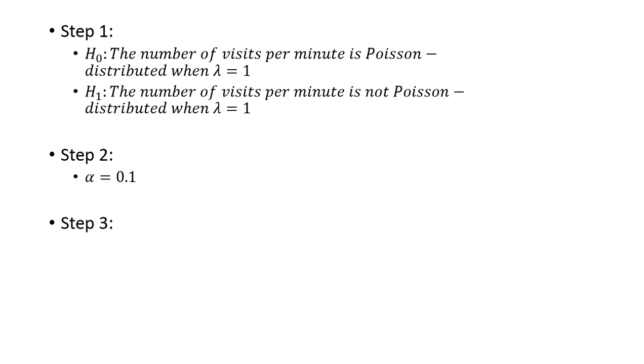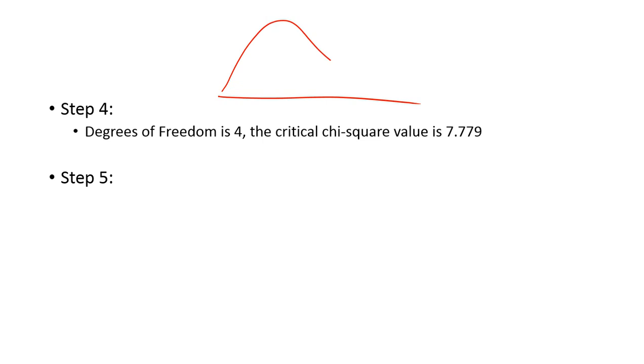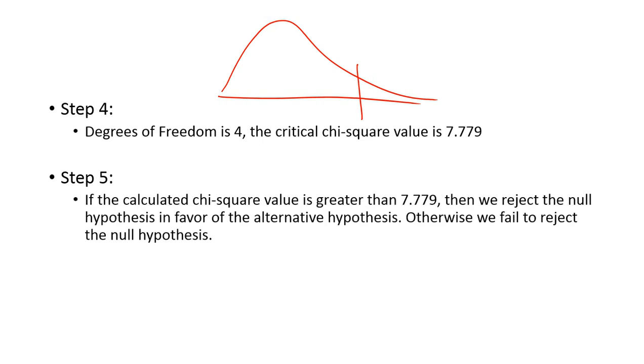Step two is our alpha. Alpha was 0.1, which is about a 90% level of confidence. Followed by that, we want to state what tests we're doing, which is our chi-squared test with a Poisson distribution. Step four is our drawing, where we're using our chi-squared test again. So you use your degree of freedom, there were five categories, so degree of freedom of four because we subtracted by one, and then your 0.1 critical value. You end up with 7.779 is your number. Step five would be if the calculated chi-squared value is greater than that, then we reject the null hypothesis in favor of the alternative, otherwise we fail to reject.